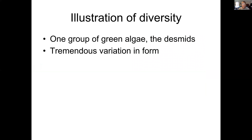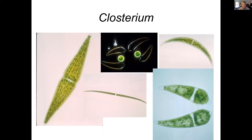We can illustrate some of the diversity in the green algae with the desmids — just the idea of how much variation in form there is. One of them is Closterium, and we see several different phases of reproduction associated with it. Different species in the genus are long and narrow or shorter and fatter.